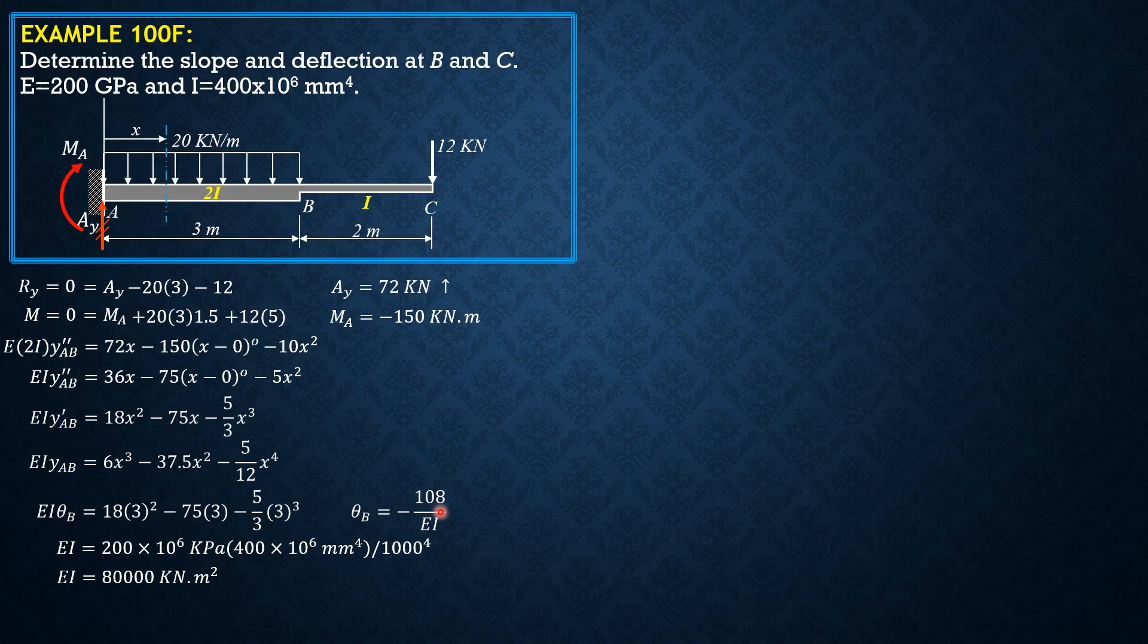So therefore, negative 108 kilonewton meter square, also kilonewton meter square divided by 80,000, that would be in radians. So theta B, therefore, is negative 108 over 80,000. So theta B in radians is equal to negative 1.35 times 10 to the negative 3 radians. You may not put the unit radian because it is understood. If it is unitless, that is in radians.